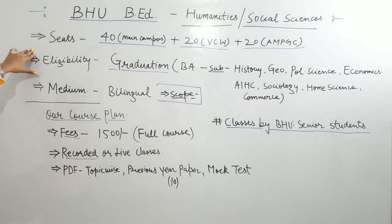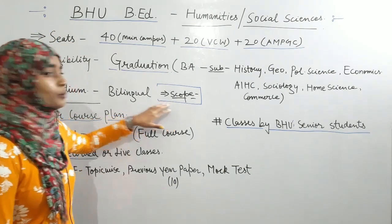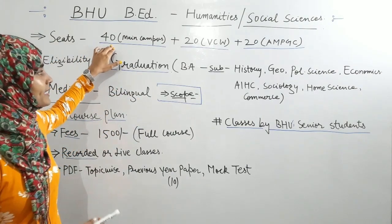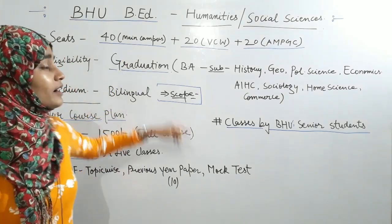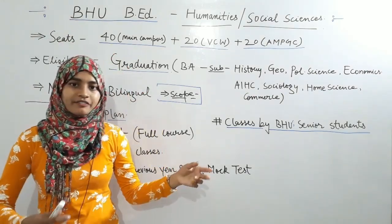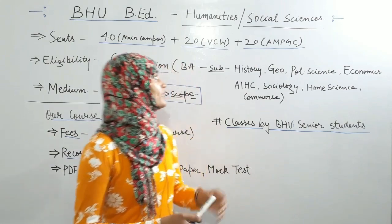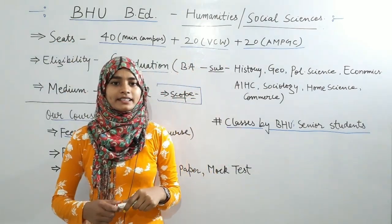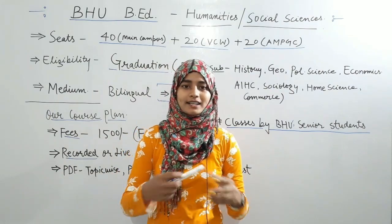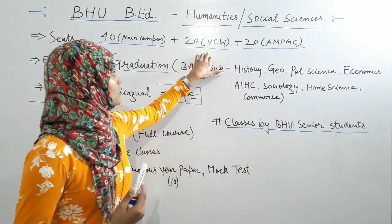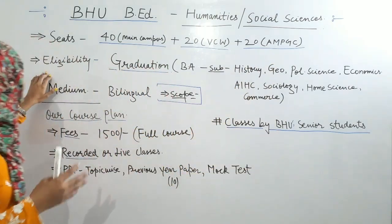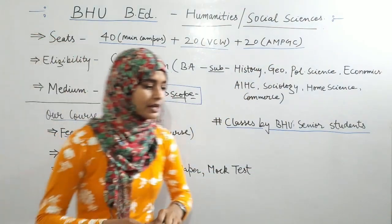Let's talk about seats, eligibility, medium, and scope. Regarding seats, for this course there are 40 seats for the main campus. Apart from this, this course also runs in two affiliated colleges — FCW and AMPG. One important thing to note is that these affiliated colleges run exclusively for female students, so there are more opportunities here for females.